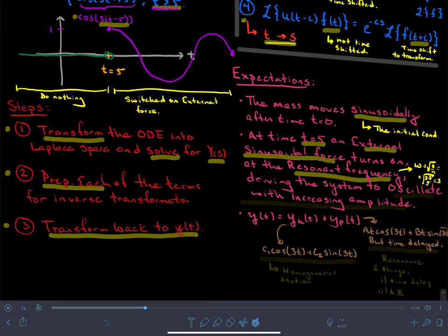So this purple graph that was shown before is the external forcing agent. It is at the resonant frequency, and so our expectation is that the system will oscillate with increasing amplitude.